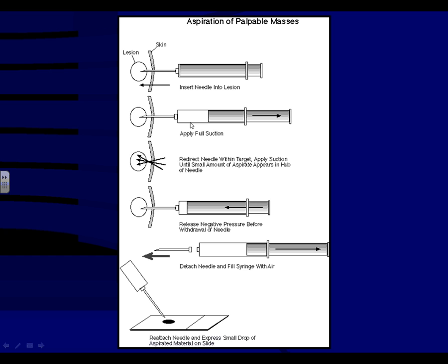We do redirect the needle a little bit once we're in the lesion, but not very much. You don't want to redirect so much that you cause trauma and there's a lot of blood. The goal is not to have too much blood because the minute you get blood into the hub of the needle, it makes it hard to get the cells you want to see onto the slide. Before taking the needle from the skin, you want to make sure to release the negative pressure.